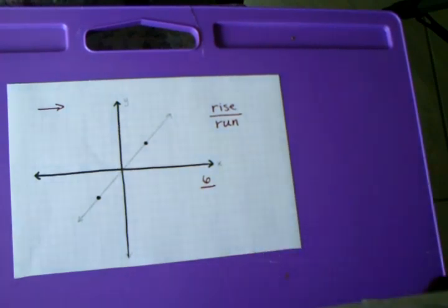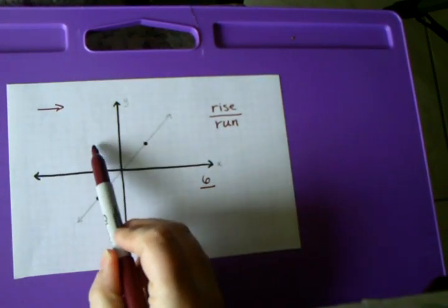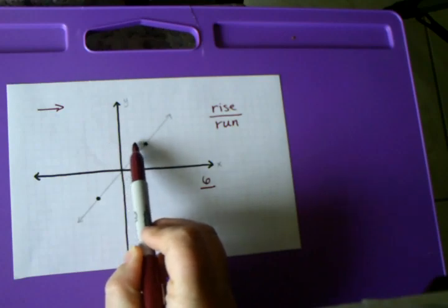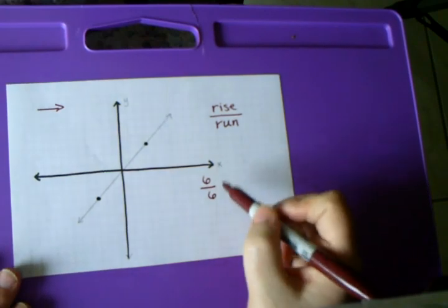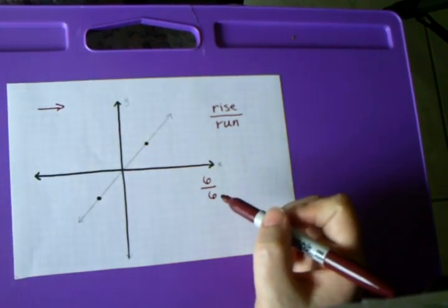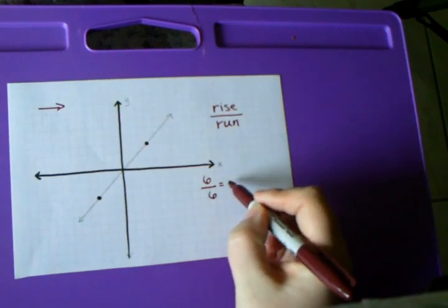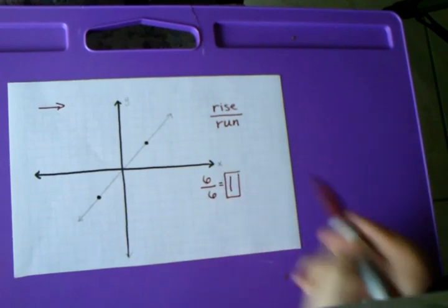Remember, it's a fraction, so it's going to be six over another number. From here, I count how many lines I go over to run into the next point — one, two, three, four, five, six. So the slope is six over six. Whenever it can be simplified, it should be simplified. How many times does six go into six? Six goes into six once. So the slope of this line is one.